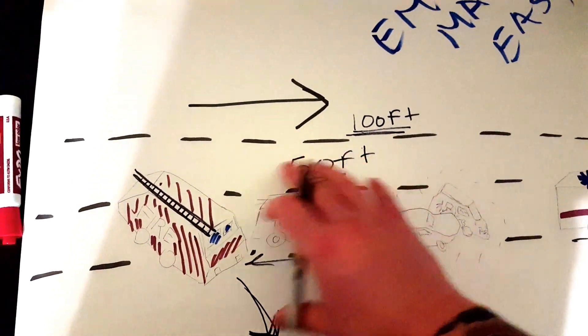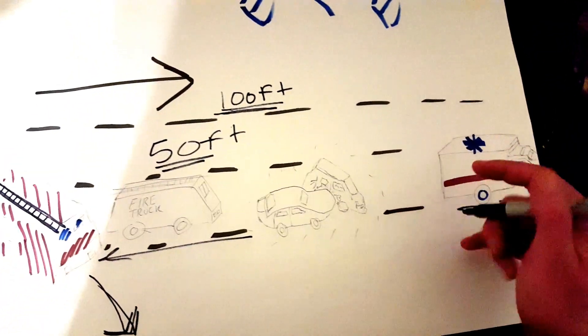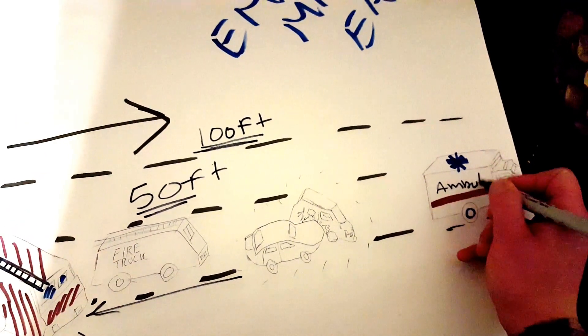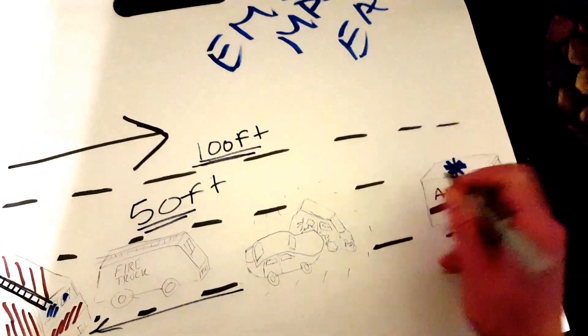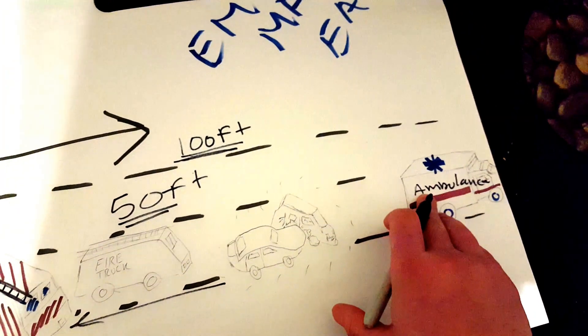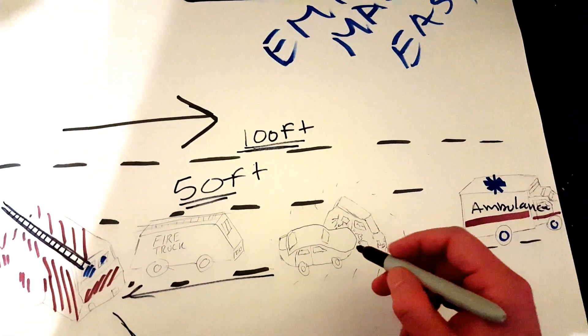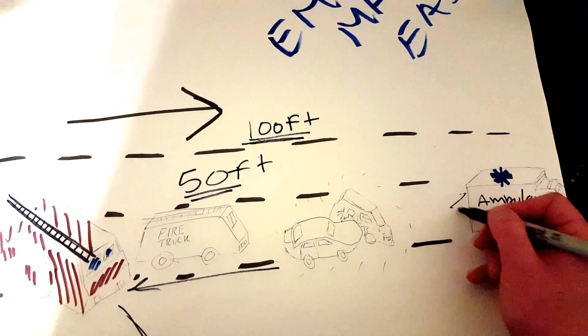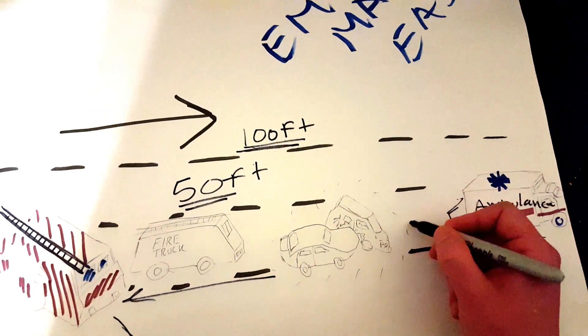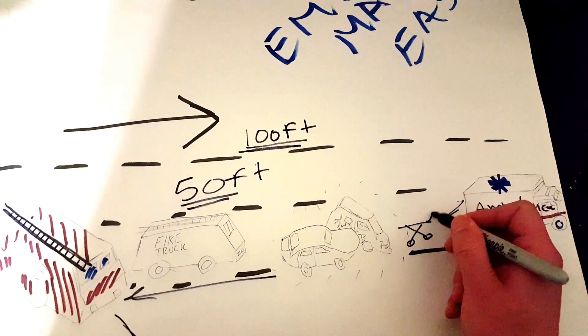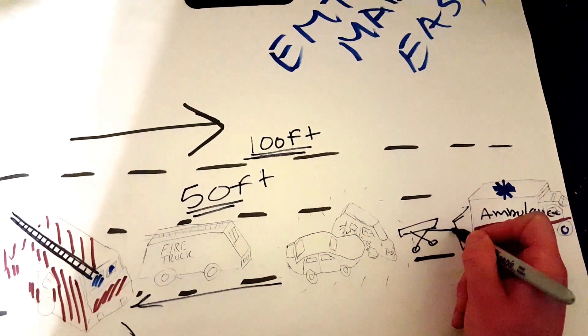And you want the rig, the ambulance, to be parked in front of the accident facing away from the accident. The reason for this is that it's gonna make extrication a lot easier. So you can put your patient on the gurney and then just quickly extricate them if you have to.